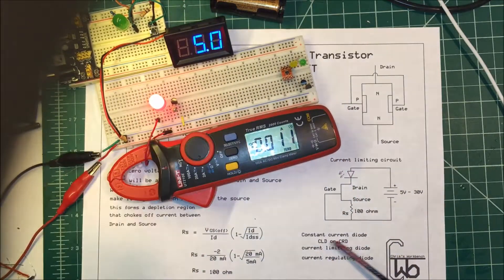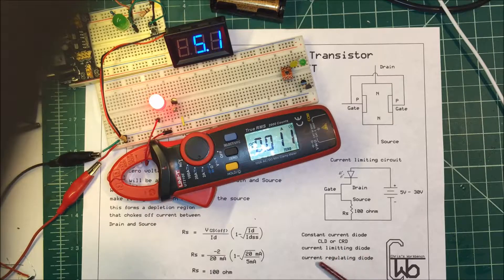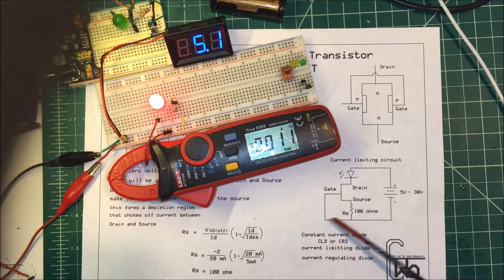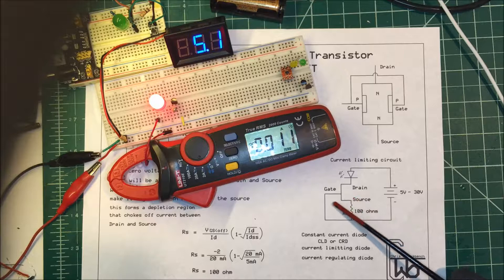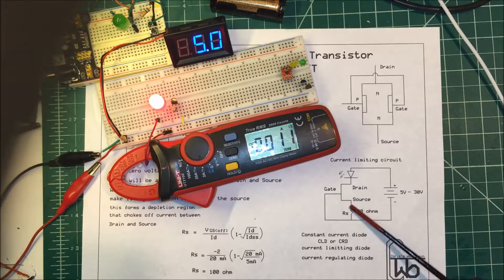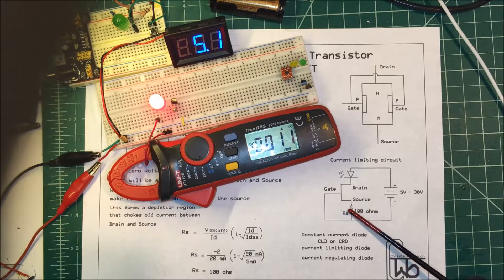They do sell constant current diodes. They have CLDs and CRDs, current limiting diodes and current regulating diodes. All they are is a JFET with the gate tied to the source with some kind of resistance in there, depending on the current you want.